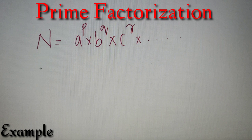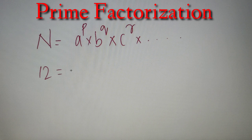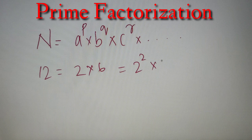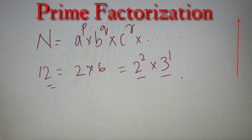For example, if we have the number 12 and we have to prime factorize it, we just represent it as a product of its prime factors raised to different powers. So 12 = 2 × 6, and 2 × 6 can also be written as 2² × 3. Thus we have prime factorized 12 as a product of two prime numbers, 2 and 3, raised to powers 2 and 1 respectively. This is the fastest way to prime factorize a number.